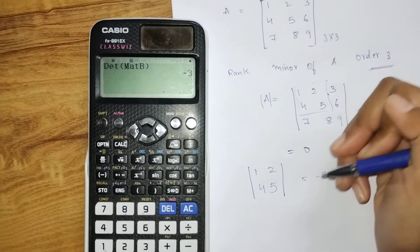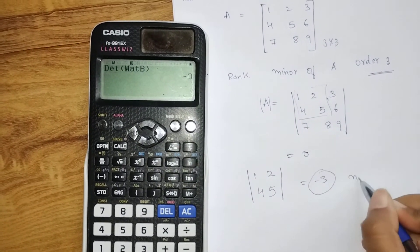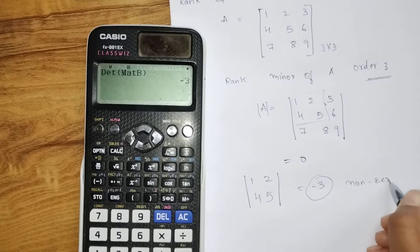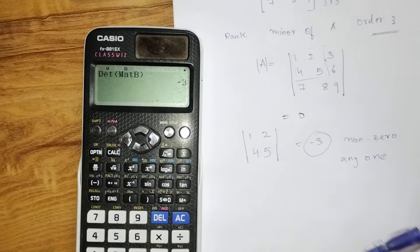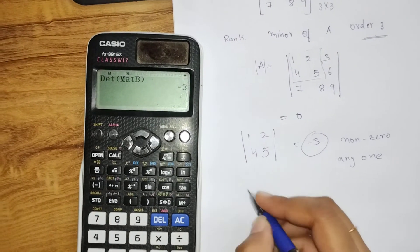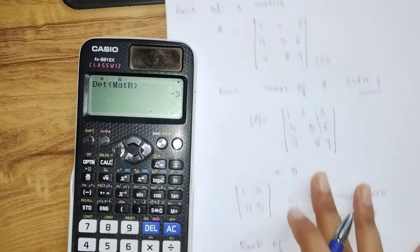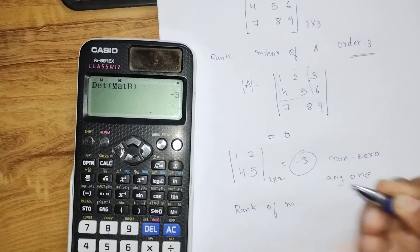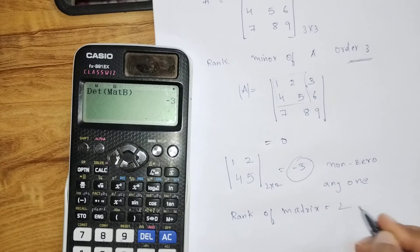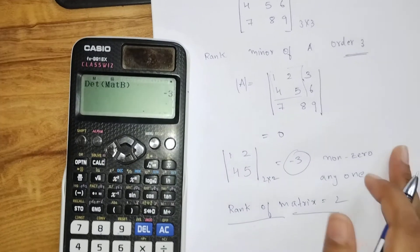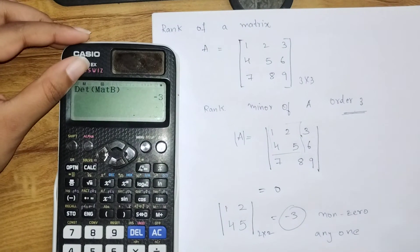So if any one of the minors is non-zero, then that order becomes the rank. So here, the rank of the given matrix is 2. That's how we find the rank of a matrix using the Casio scientific calculator. Thank you so much.